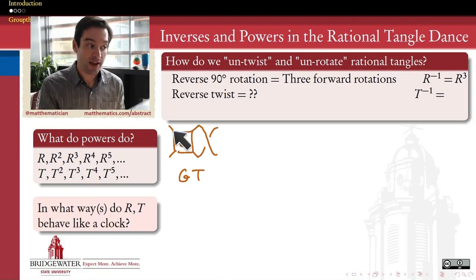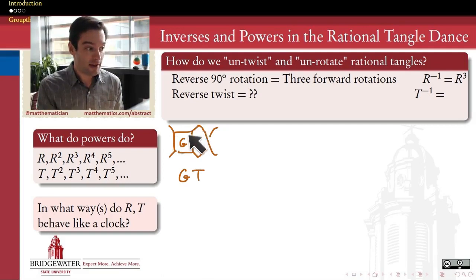So if you hand me a tangle that we're going to call G, and then I put a twist in that tangle, then how, through this process of using the same twists and rotations, can we untangle that twist? How do we get our original tangle back?